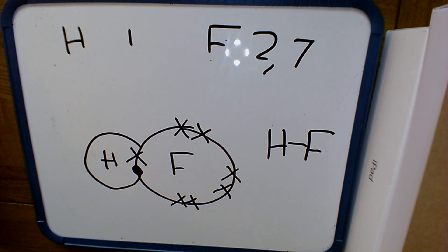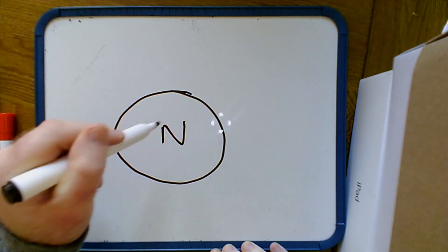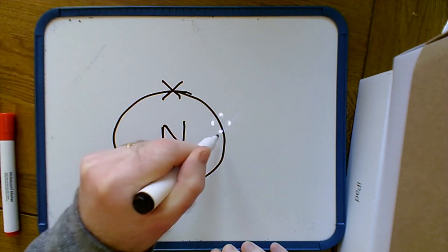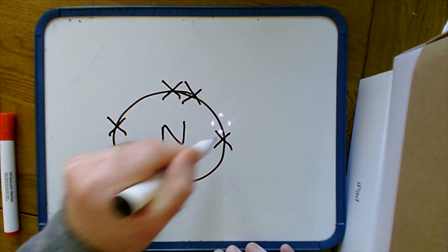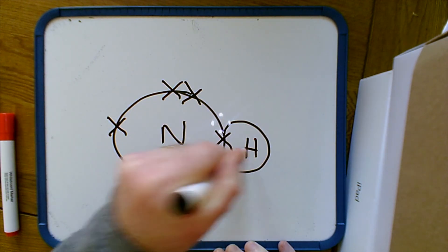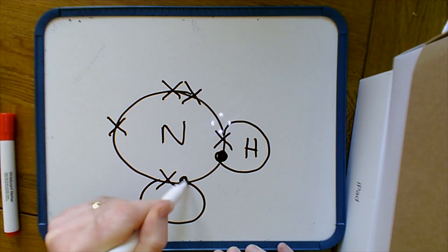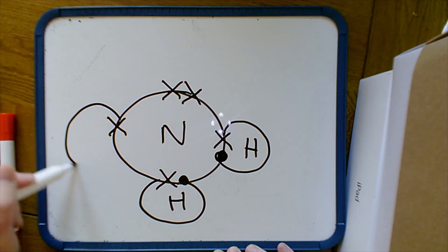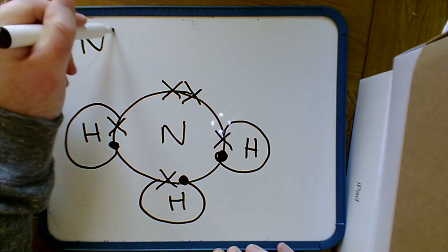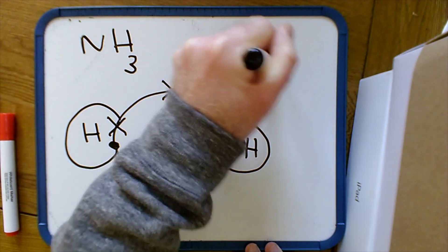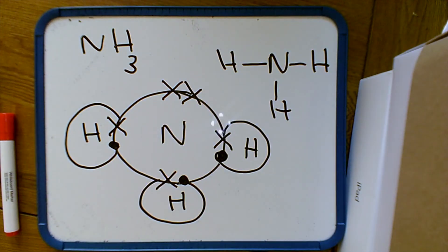For question two, ammonia: start with the central atom, nitrogen, and put the electrons in at 12, 3, 6, 9 o'clock. With five electrons in the outer shell you should have three unpaired electrons. Pair them up with the three hydrogens. Both hydrogen and nitrogen now have full outer shells — hydrogen only needs two electrons for a full first shell, and nitrogen needs eight. This gives three single covalent bonds.